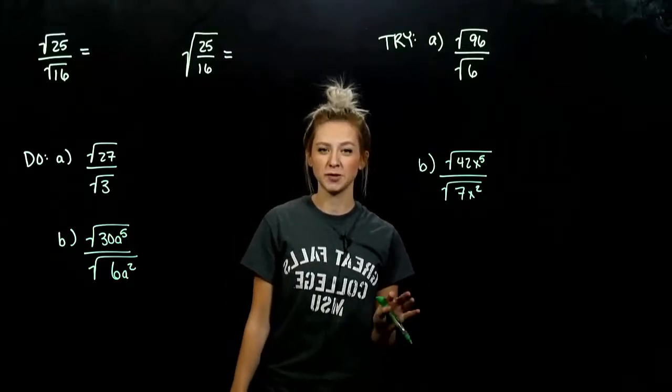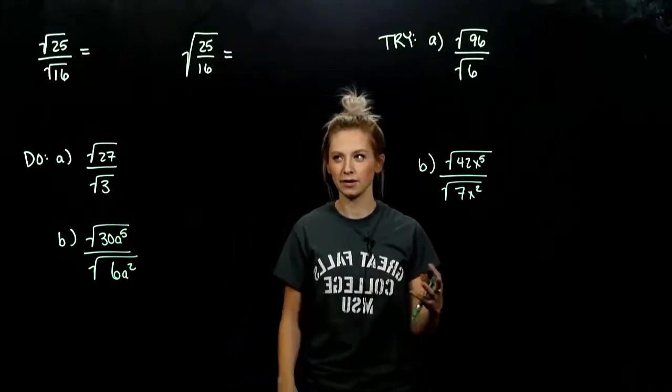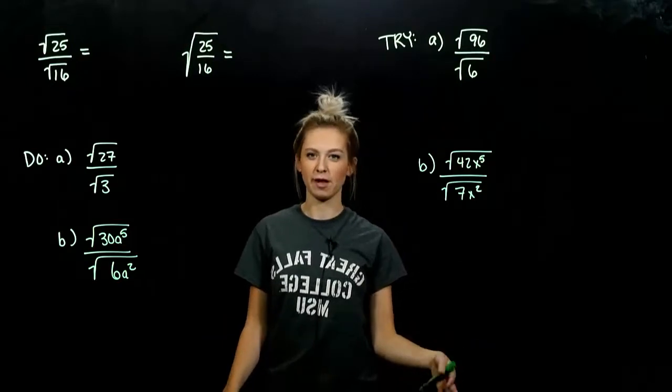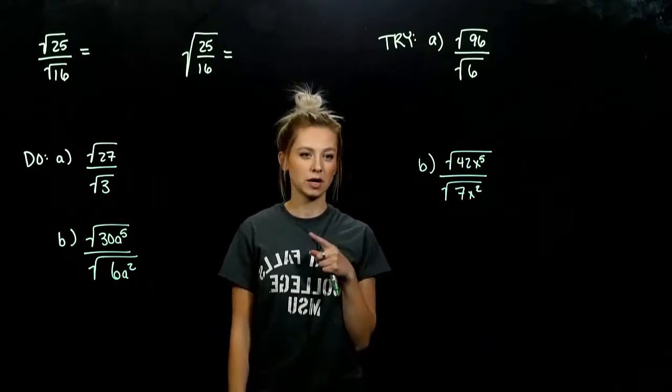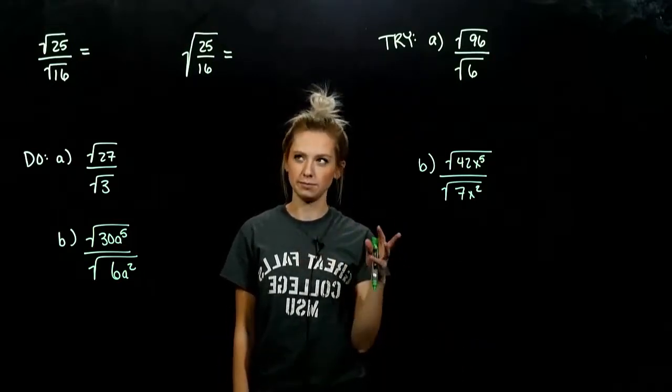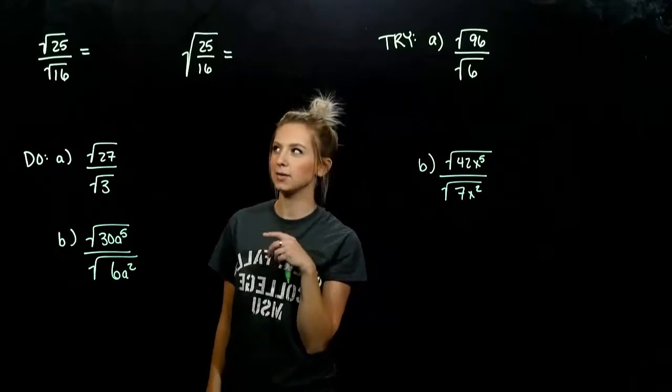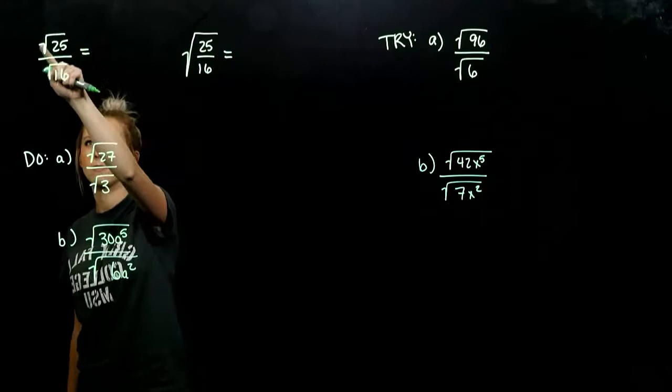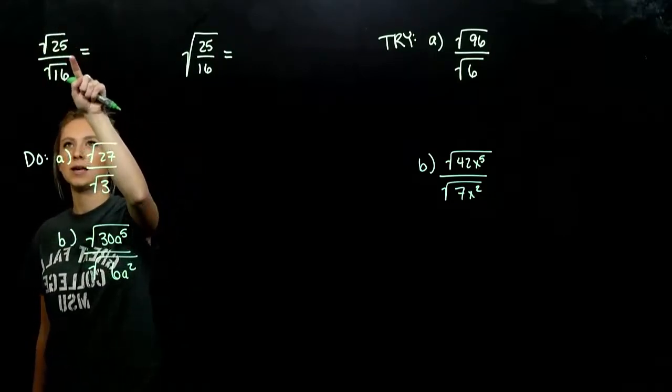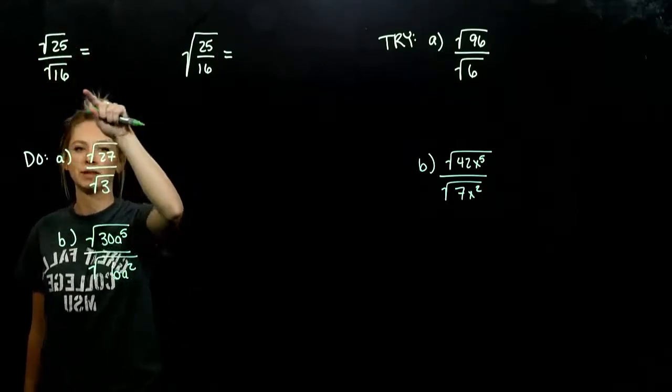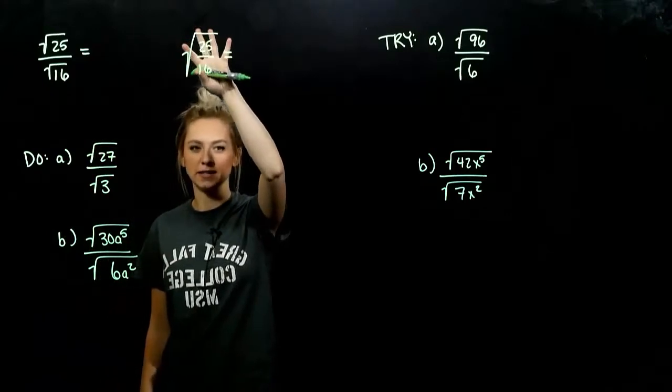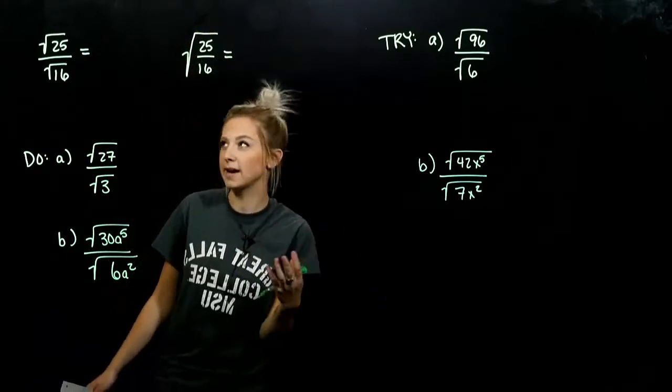We're able to multiply radical expressions together or even pull them apart to evaluate them more easily. Now we're going to look at the same for division. So the very first example, pretty straightforward. Is it going to be the same if I take the square root of the top individually and the bottom individually? Is it going to be the same as if I take the square root as a whole?